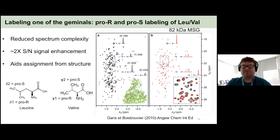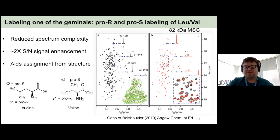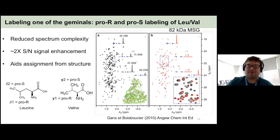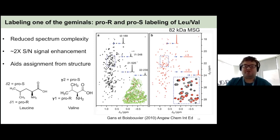For leucine and valines, which have two methyl groups, you can label only one of the groups — referred to as PRO-S or PRO-R labeling. For really large proteins, this helps a lot: it reduces spectral complexity by halving the number of leucine and valine methyls, provides modest sensitivity enhancements by reducing dipole-dipole relaxation from intramethyl groups, and aids in assignment from an X-ray structure by adding stereospecificity.